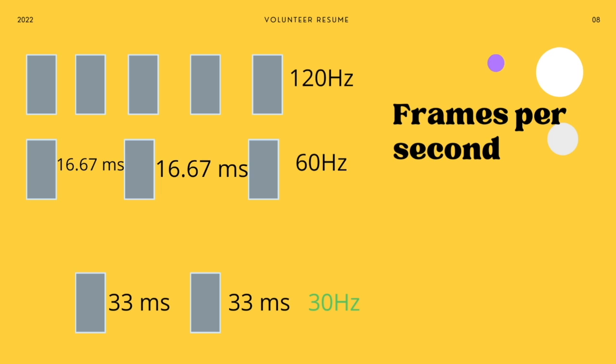With advanced screens like the latest iPhones, processing speed and refresh rates have increased significantly. At 120Hz, there is roughly only 8 milliseconds to create one frame — which is very very little time. All user interaction responsiveness needs to be checked and tested with these constraints in mind while testing your website across different kinds of devices.